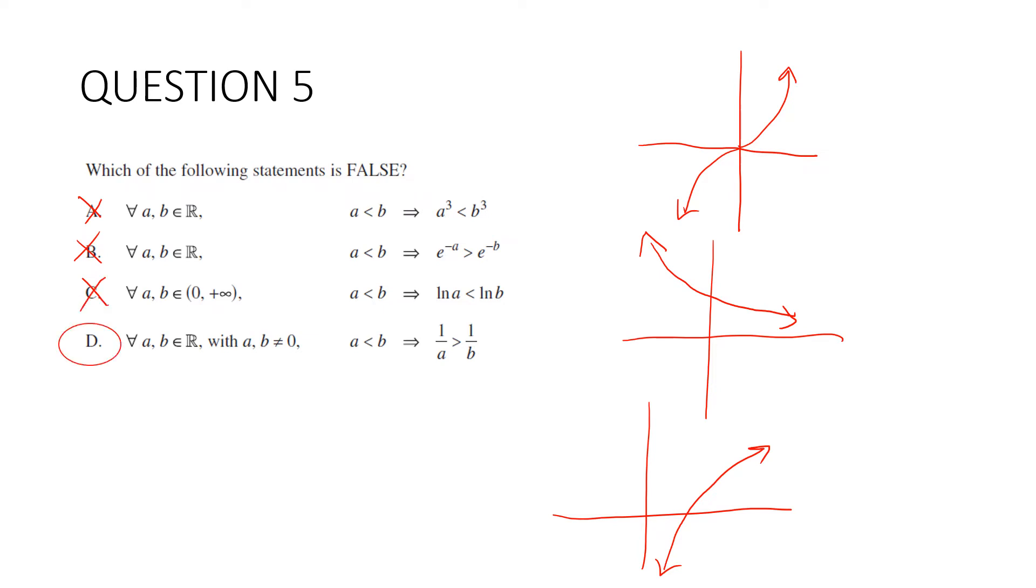So the answer must be d. But let's have a look at why that is. a and b are real numbers. They're not equal to zero. If a is less than b, then one on a is greater than one on b. In this case, we have a hyperbola. Here's the thing. They're both decreasing, both of these bits. And if we only have the negative numbers or only the positive numbers, then it would be a true statement. But from this point here to this point here, it is increasing. So if I chose, say, a is equal to negative two and b is equal to three, this wouldn't be true. So that's why the answer is d.